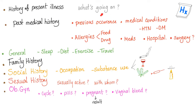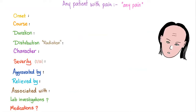History of present illness covers what's going on right now. Past medical history covers previous occurrences — has it happened before? Medical conditions include high blood pressure, high blood sugar, and high cholesterol. Do not say 'hypertension' to the patient — say 'high blood pressure.' Ask about allergies to food, drugs, or animals; current medications; hospitalizations; and surgeries. Then general: sleep, diet, exercise, travel. Ask these pain questions to any patient with any type of pain — chest pain, headache, abdominal pain, etc.